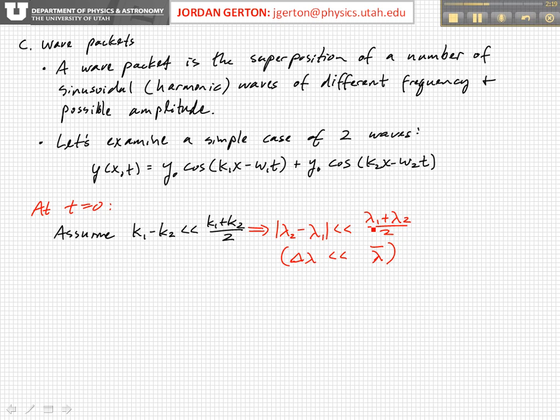So that means that the waves don't differ that much in frequency or wavelength, and we're going to represent the absolute value of lambda two minus lambda one as delta lambda, and lambda one plus lambda two divided by two as lambda bar, okay, so that's the average wavelength.